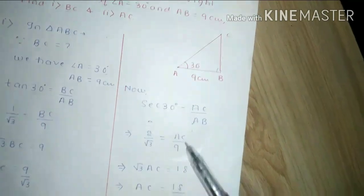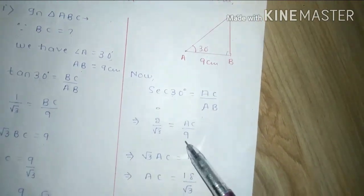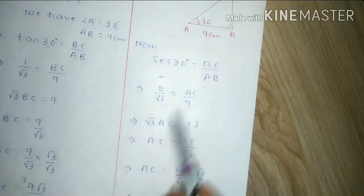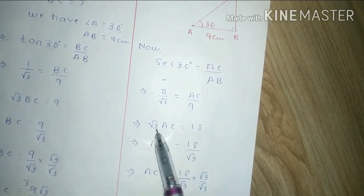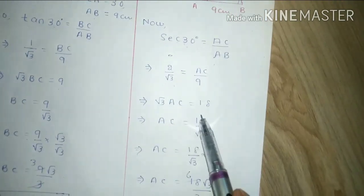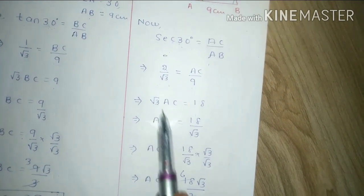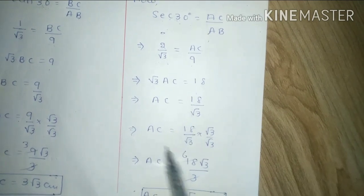After that in place of AC we will write AC, in place of AB we will write 9. After that cross multiply. After cross multiply what we get is under root 3 into AC and 9 into 2 is 18. Now next what we will do, AC was into, here it will become divide.